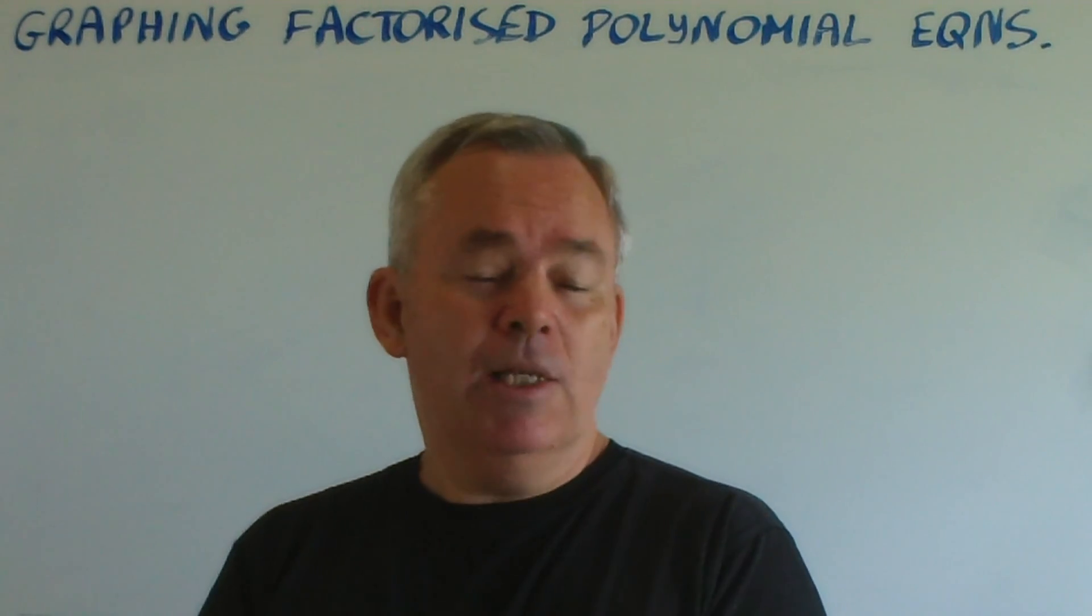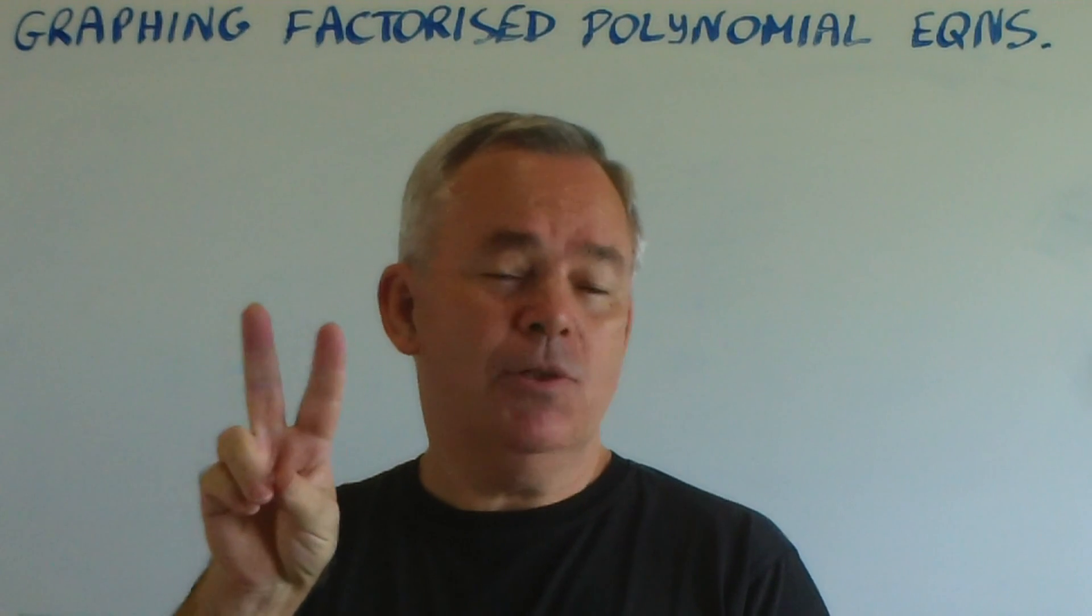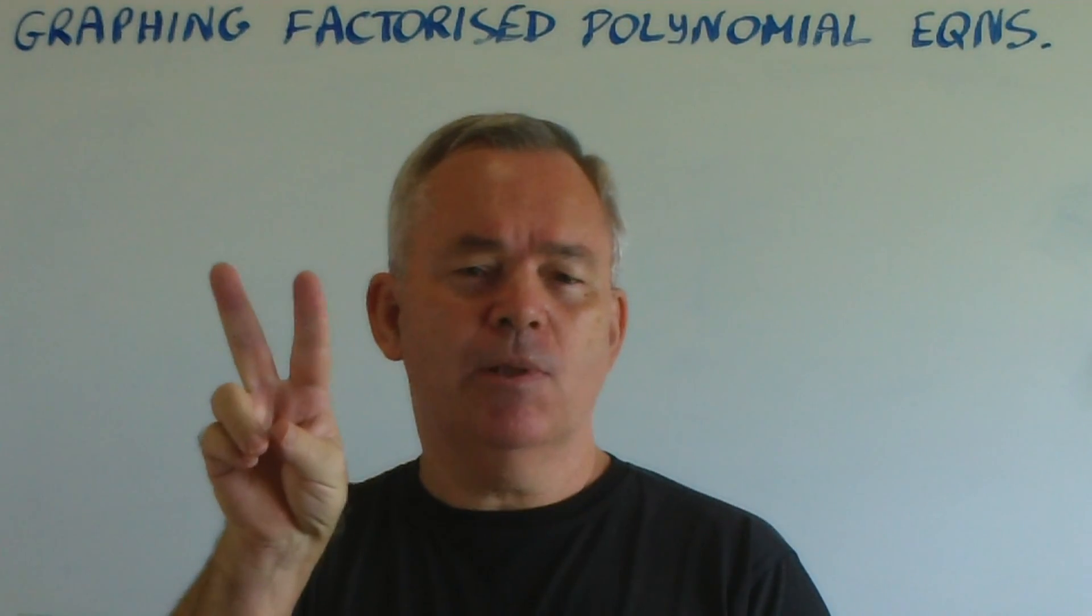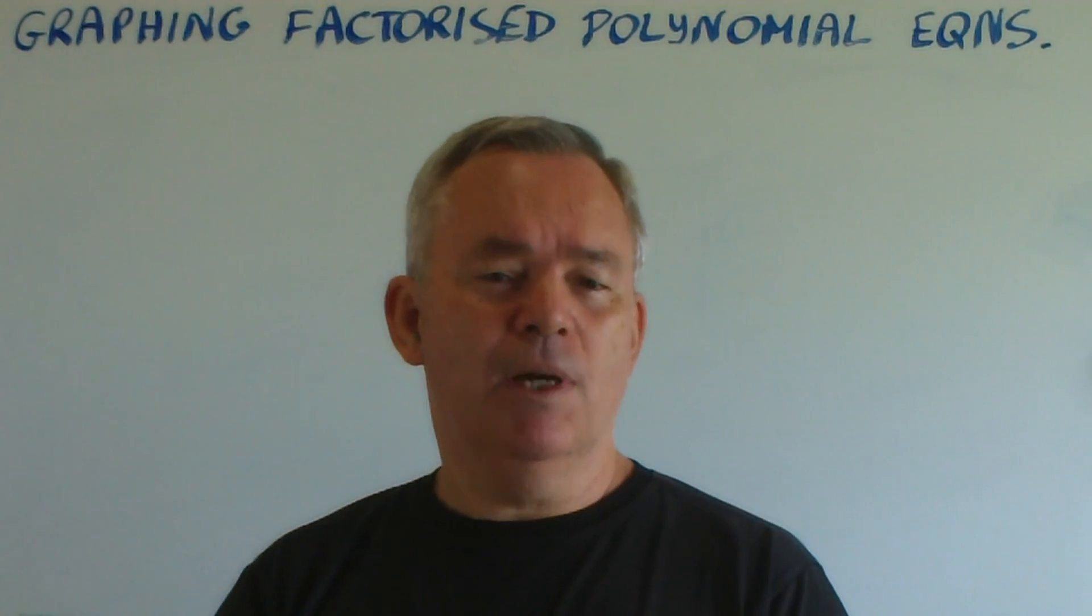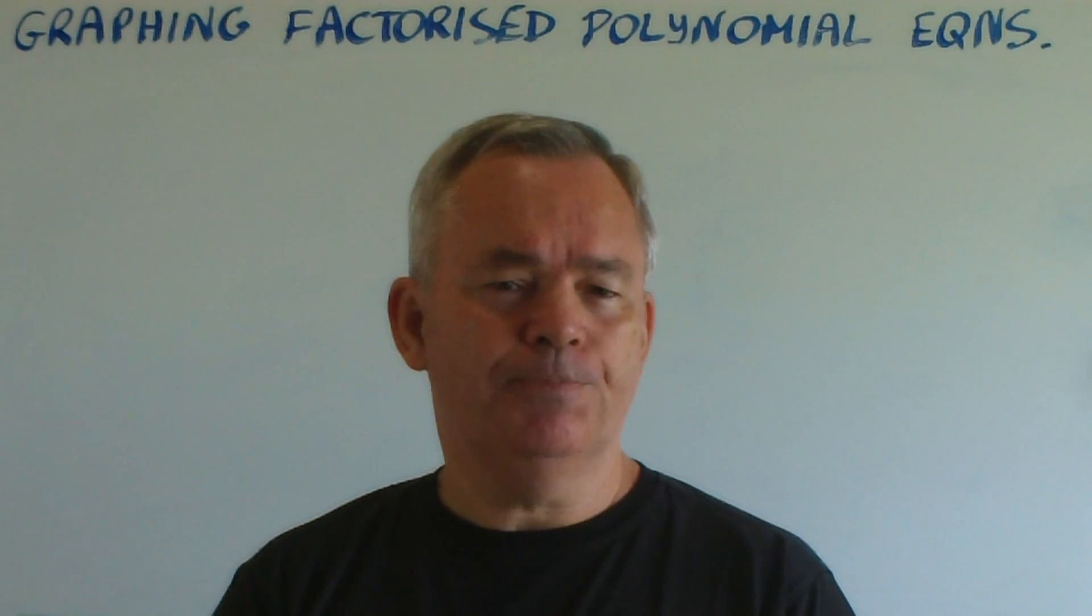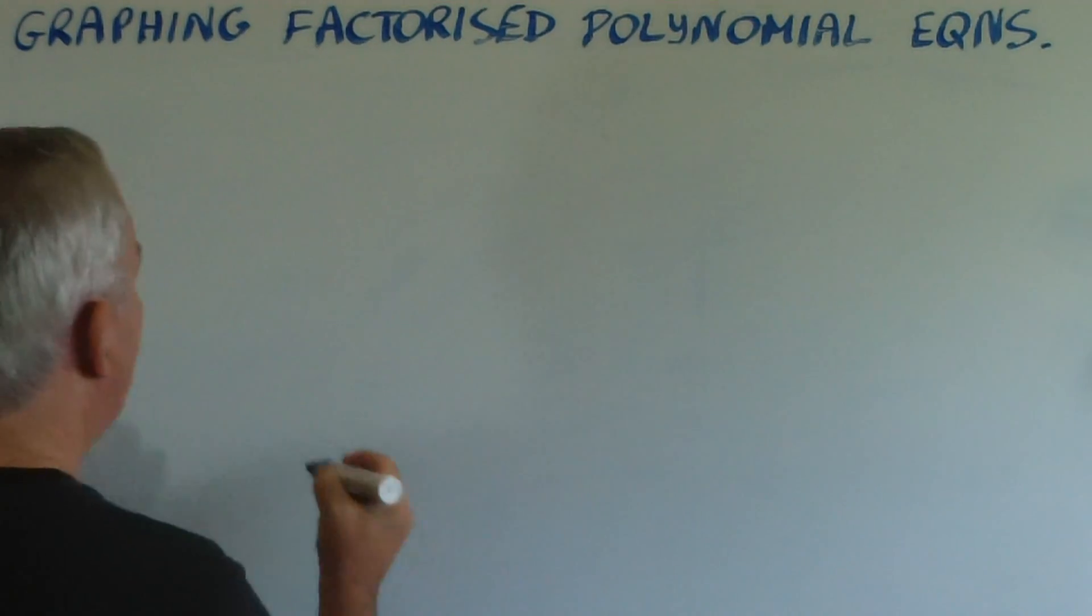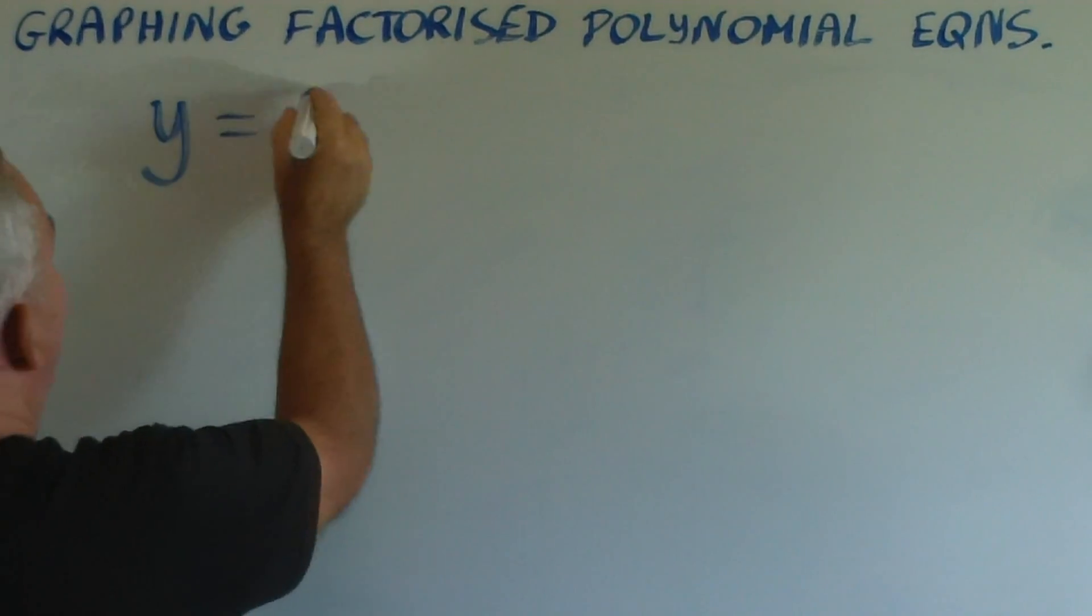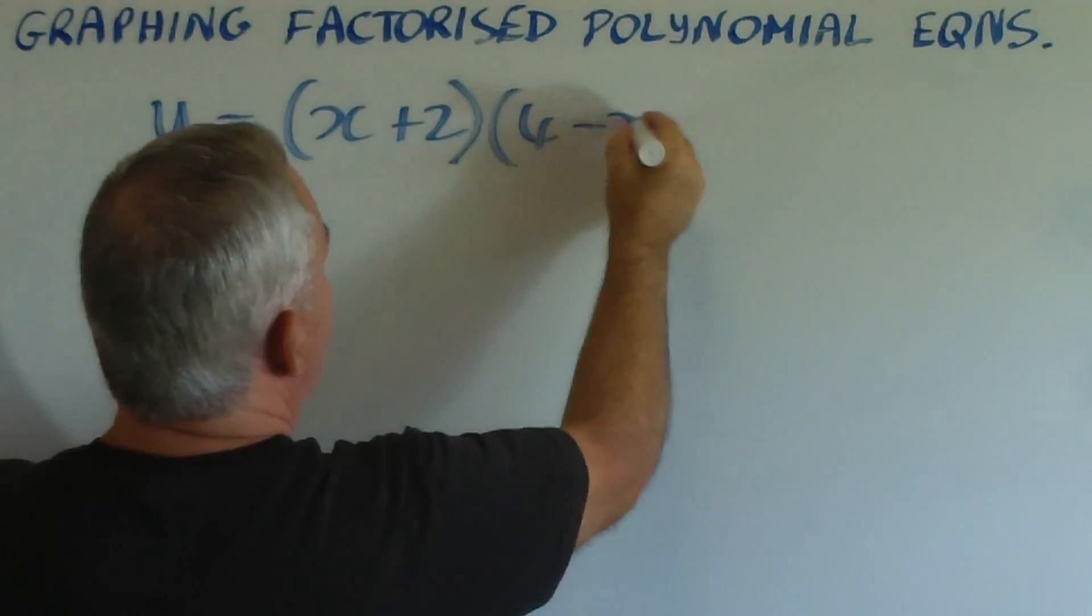The theme for today's video is what happens if one of those factors, or more than one of those factors in the polynomial, appears to be reversed, particularly if there's a minus sign in front of the x value. To do so, I want to first discuss a simple quadratic equation. That is, y equals (x+2)(4-x).